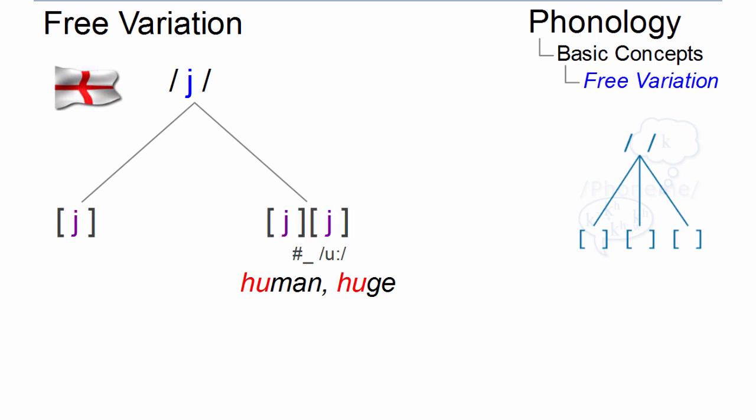You can pronounce them using the palatal approximant J as in human or huge, or you can take the voiced palatal fricative J as in human and huge. Both variants even share the same symbol.